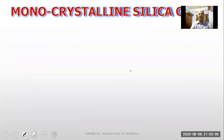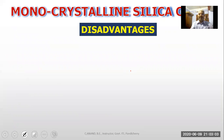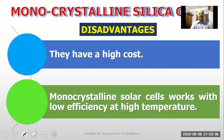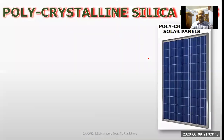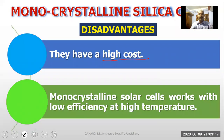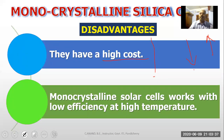But there are disadvantages. They have high cost. The second disadvantage is that monocrystalline solar cells work with low efficiency at high temperatures. Temperature sensitivity is very high — when temperature increases, efficiency decreases.